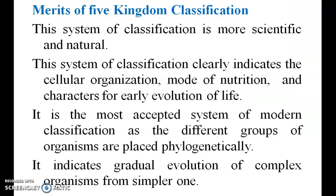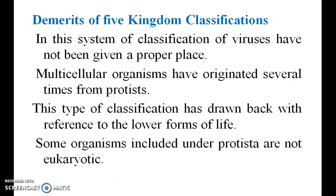Merits of five kingdom classification. This system of classification is more scientific and natural. It clearly indicates the cellular organization, mode of nutrition, and characters related to the earlier evolution of life. Demerits: the classification of viruses has not been given a proper place. Also, multicellular organisms have originated several times from protists, which is a drawback with reference to the lower forms of life.